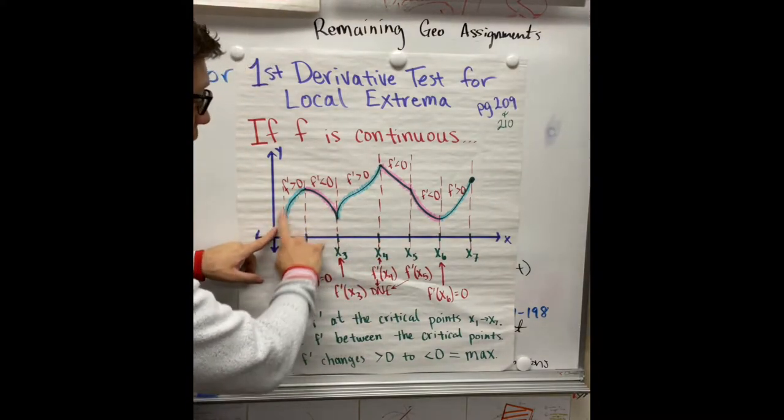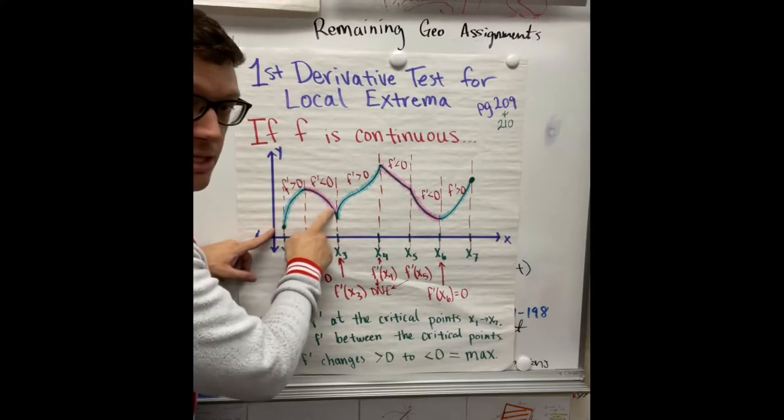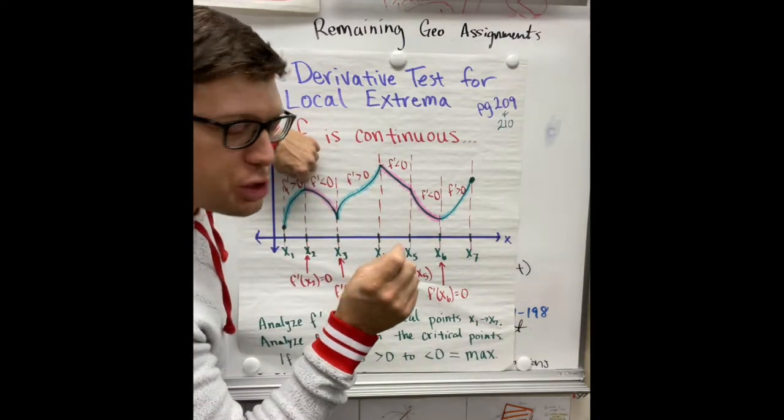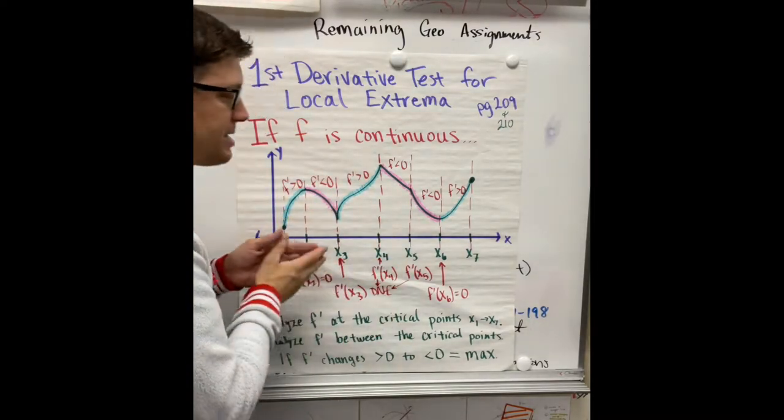So increasing, derivative is positive. Decreasing, derivative is negative. When that change happens, you have some sort of an extreme, specifically in this case, a maximum.